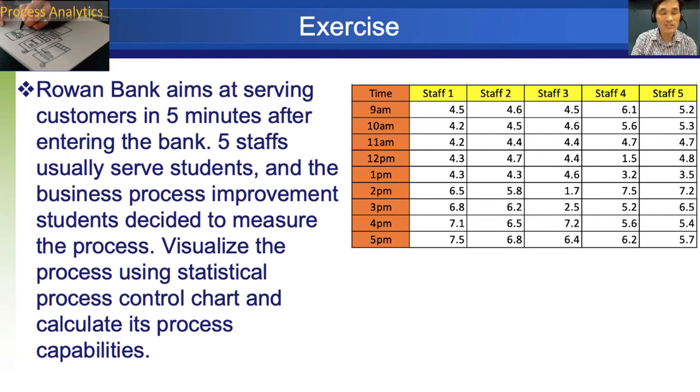Then let's go through this statistical process control chart again together. Rowan Bank aims at serving customers in five minutes after entering the bank. Five steps usually serve students and the business process improvement students decided to measure the process, visualize the process using statistical process control chart and calculate its process capabilities. So let's look at the data, we see there are five steps, and they are working from nine o'clock till 5pm. And here is the average wait time for a customer. And this data was collected for the entire day.